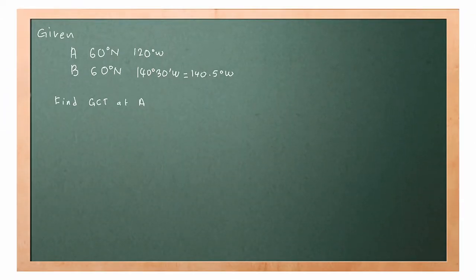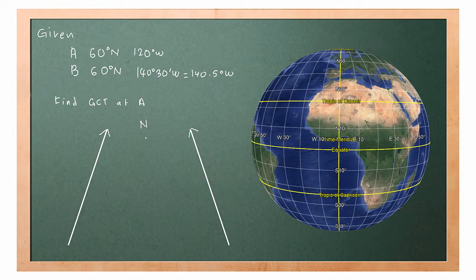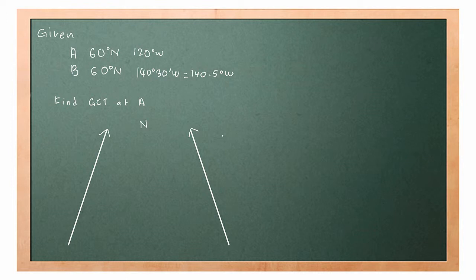For the first method, we need to draw a diagram. First, draw the meridians (also known as longitudes). Both meridians are converging toward the North Pole, because in the northern hemisphere all meridians converge toward the North Pole, and in the southern hemisphere they converge toward the South Pole. Next, draw the given latitude as a curved line concave to the nearer pole — in this case the North Pole. Our latitude is shown in green.